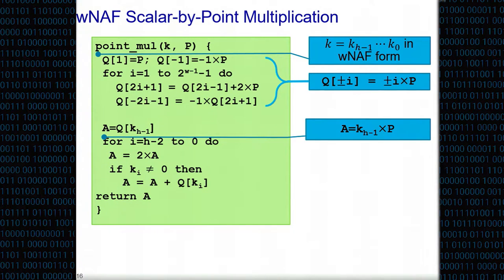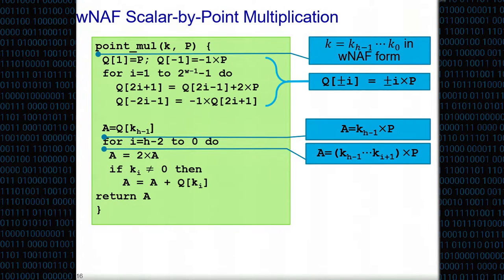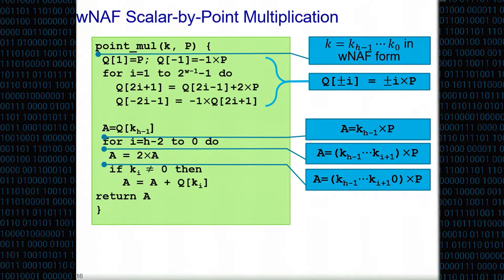Given that this is the invariant of the table q, let's see how the algorithm proceeds. First we take the accumulator and we set it to be the value we fetch in the k_(h-1) location. Recall the invariant: q of k_(h-1) is the same as k_(h-1) times p, and that's exactly what a holds. Trust me for the next 30 seconds that in the i-th iteration of the loop, a the accumulator is k_(h-1) down to k_i cross p. Assume this is true and see how the algorithm proceeds.